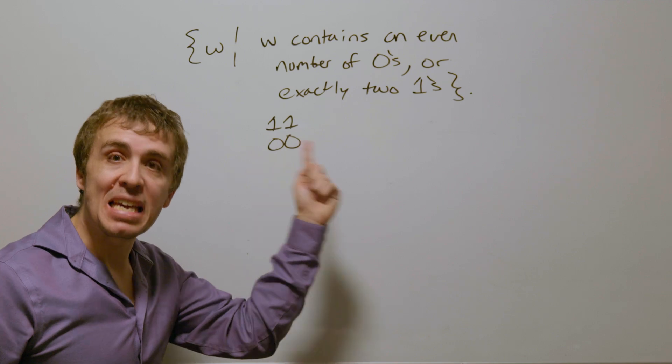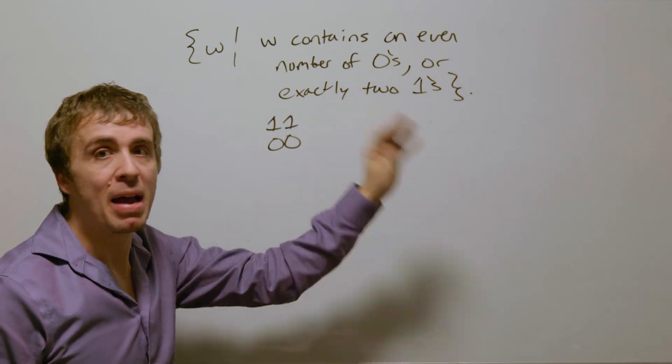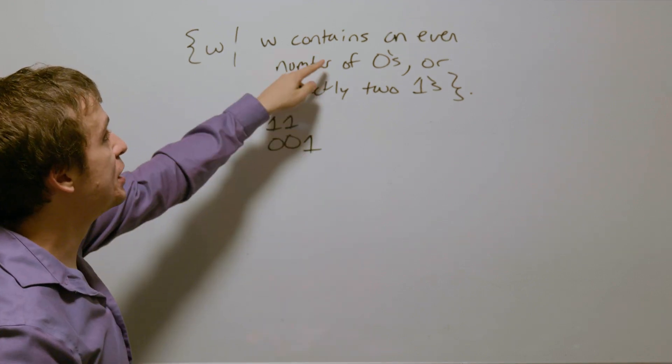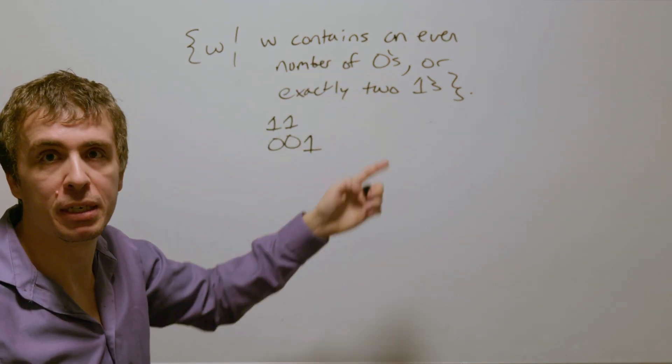If we have the string zero, zero, that has an even number of zeros, and so it doesn't matter what the number of ones is. In fact, it could have exactly one, one, that's okay, because it's an or in between the two conditions.